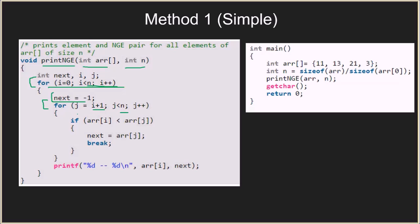We check if array[i] is smaller than array[j]. Whenever we find the first greater element, we update the value of next from minus 1 to that element and then break out of the loop. We then print the next greater element. If no element passes this condition, the value of next remains minus 1 and we print minus 1. In the driver method you have the input array, calculate its size, and call printNextGreaterElement passing the array and its size.